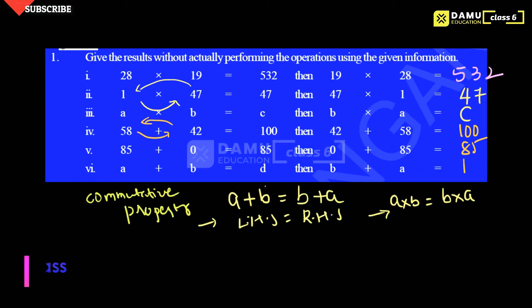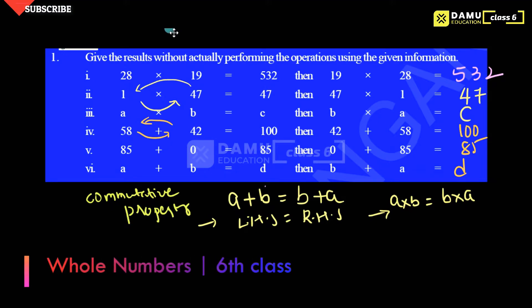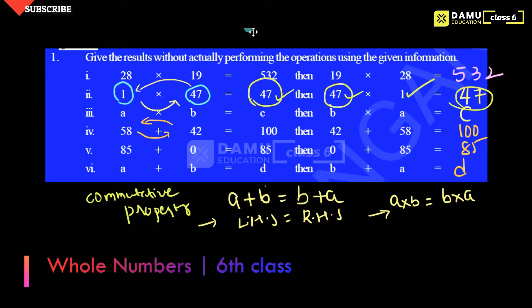Here we need to understand additive identity and multiplicative identity. If you multiply any number with 1, you get that same number — for example, 47 multiplied by 1 gives 47. Any number multiplied by another number, if the result is the same number, then that other number is called the multiplicative identity. To get 47 as the answer, we multiply by 1, so the multiplicative identity value is 1.